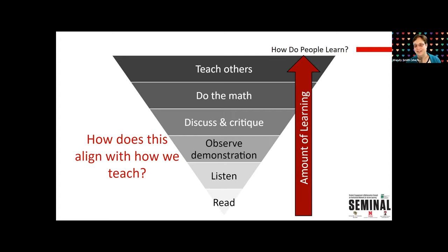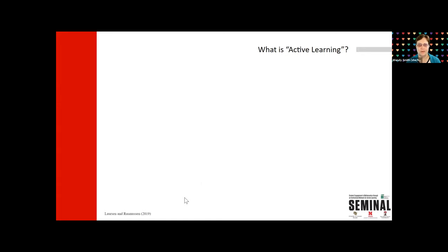Unfortunately, beliefs and attitudes toward mathematics have a decreasing trajectory from kindergarten to graduate school. We know a lot more, especially in the last couple of decades, about how people learn. The way we have traditionally been teaching — having people read stuff, listen to lectures, or observe demonstrations — these are some of the least effective ways to engage people in learning. The more engaged people are, the more likely we're setting them up to learn well. So how does this align with how we teach? Often not well at all — we're teaching exactly upside down.